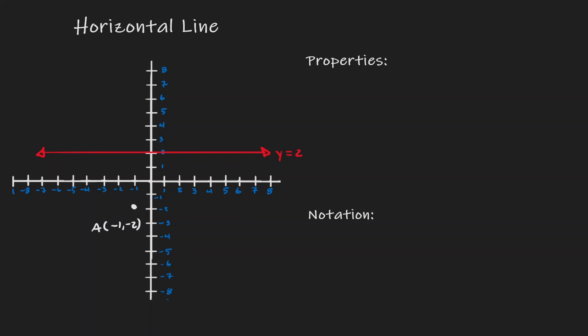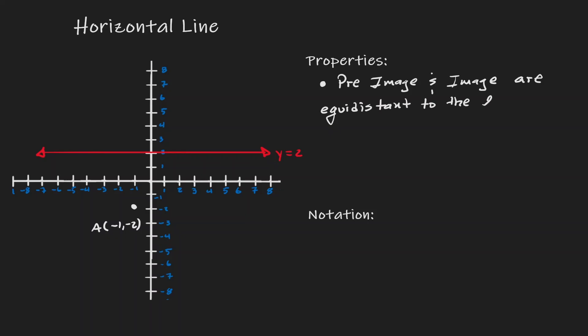Let's consider some properties when we are reflecting over a horizontal line. The first property is that the image and the pre-image are equidistant to the line of reflection. So let's find how far this point is from the line of reflection. Point A is 4 units away from the horizontal line. We can think of it as the difference of y-values: point A has a y-value of negative 2, and the line is at y equals 2, so the distance is 4 units.